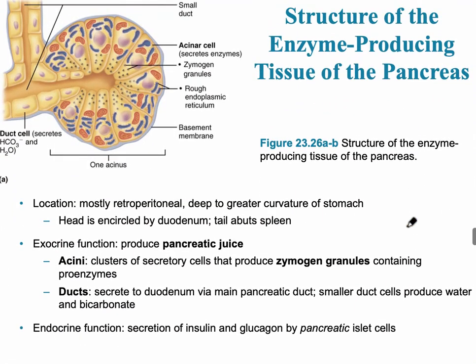The pancreas has a dual function. Its digestive function — the exocrine portion — is that it produces enzymes. There is also a small endocrine portion. There are four main parts to the pancreas: the head, the body, the uncinate process, and the tail. Its overall location is retroperitoneal, deep to the greater curvature of the stomach.